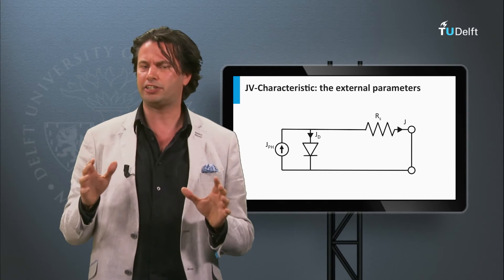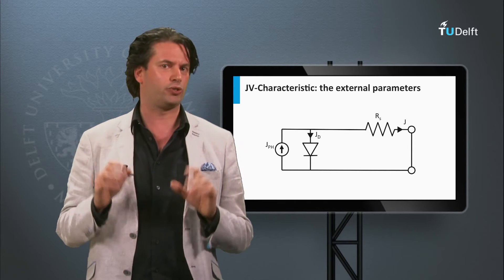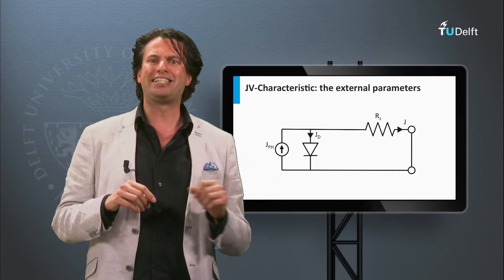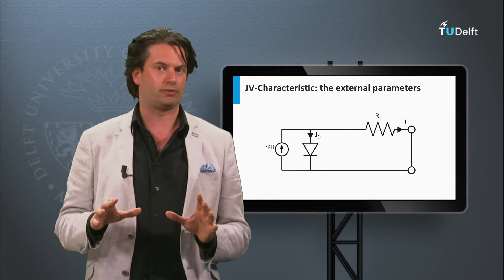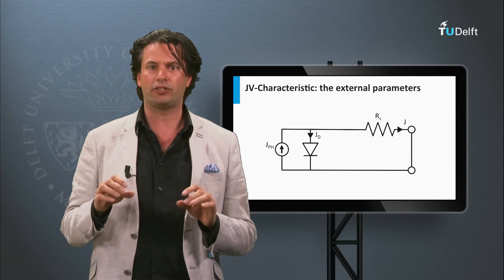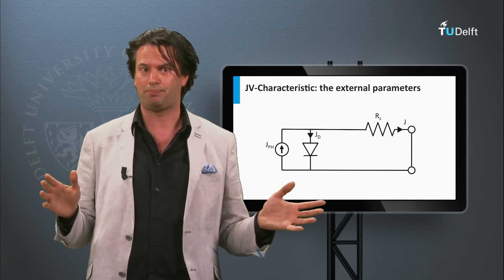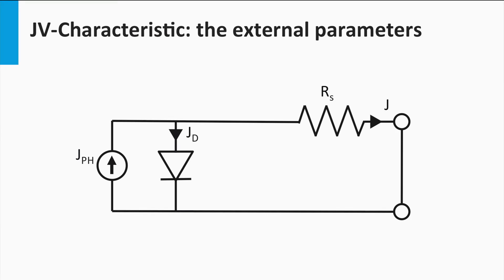How does the series resistance appear in an electric circuit? Here we will use a zigzag line as a symbol for the resistor. Note that sometimes a rectangle is used as a symbol for resistor as well. As discussed earlier, the ideal solar cell is a parallel connection of a current source and a p-n diode. The series resistance is, as the name already reveals, connected in series with these two elements. If the solar cell generates current, the solar cell will lose voltage over the series resistance.